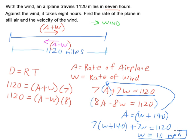That's one of our answers. We've got the wind speed. I'll come over here for the speed of the airplane, and just take that W and plug it in for either of these equations. I'll use this first one and say 7A plus 7 times 10. Now 10 for W equals 1120.